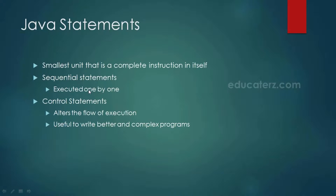So what is basically a statement? A Java statement is nothing but the smallest unit that is a complete instruction in itself. Generally, statements contain expressions and end with a semicolon. There are two most commonly used statements: sequential statements and control statements.